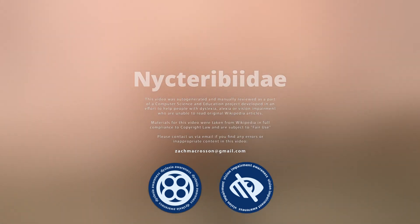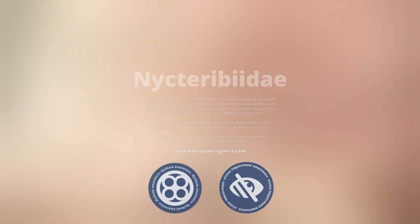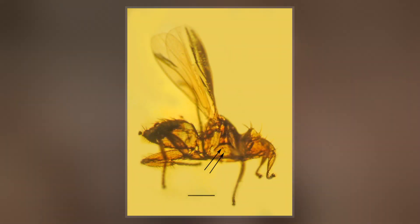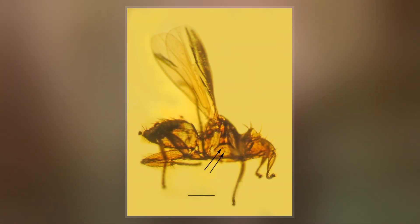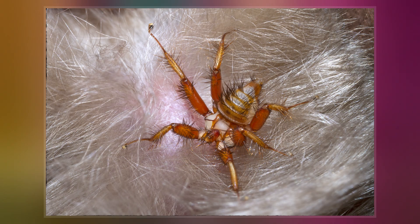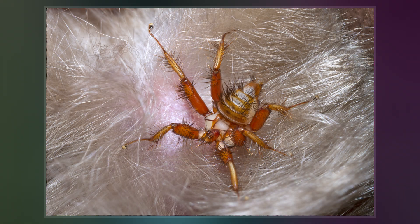Nycteribiidae is a family of the true fly superfamily Hippoboscoidea, known as bat flies, together with their close relatives the Streblidae. As the latter do not seem to be a monophyletic group, it is conceivable not to unite all bat flies in a single family.